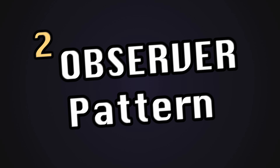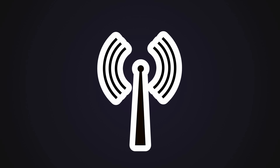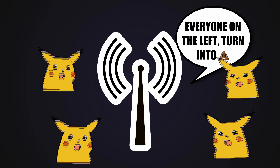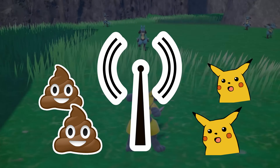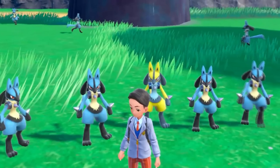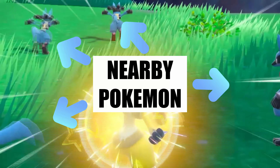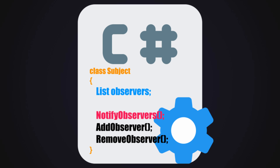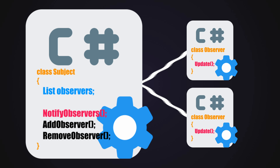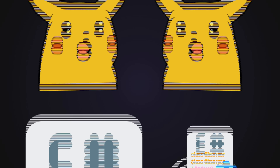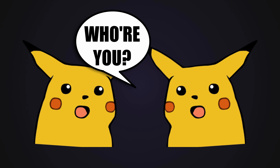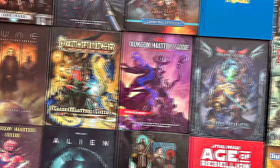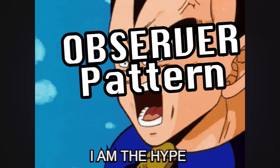Broadcasting messages brings us to the second pattern: the observer pattern. The concept can be boiled down to a radio tower which sends out a signal and observers listen in and respond to it. It's used all over in game development — like in Pokemon, when the player enters a battle, all nearby wild Pokemon are subscribed to that event and automatically run away. The observer pattern works in two phases: the subject notifies all observers when an event occurs, then each observer calls a method in response, like running away from the player, allowing us to create an army of entities without them having any knowledge of each other.